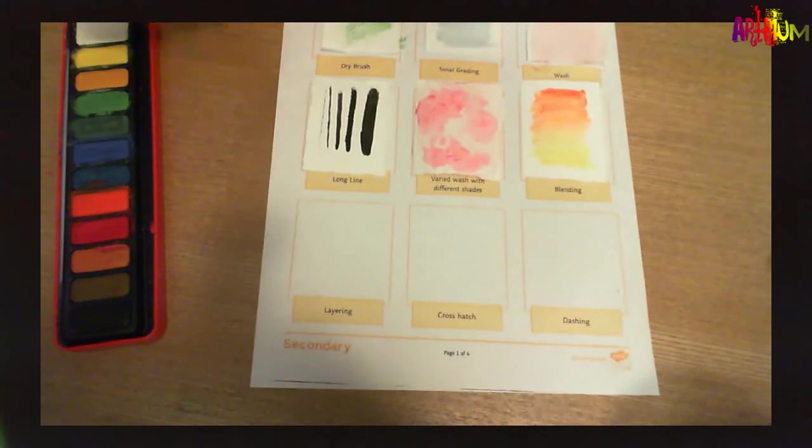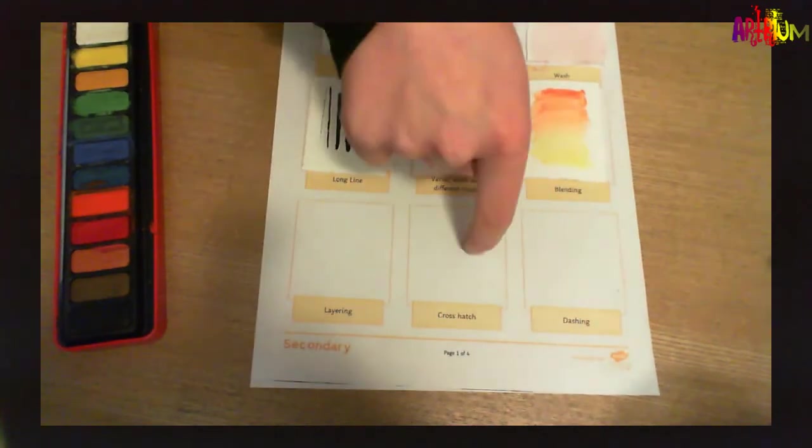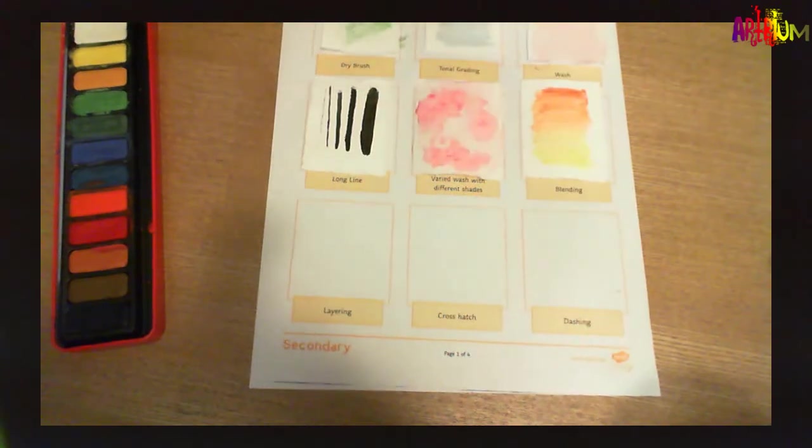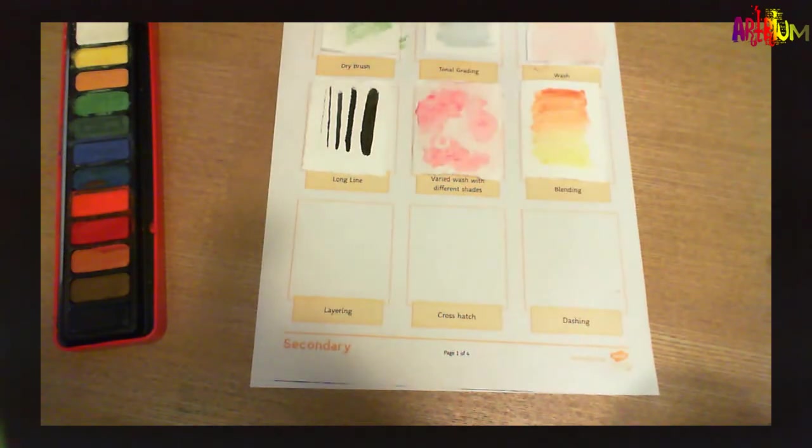Our last three we're going to look at: layering, crosshatch, and then some dashing as well. So very quickly, the layering, we would really need to apply our paint, let it dry, and then keep on layering on to the top.